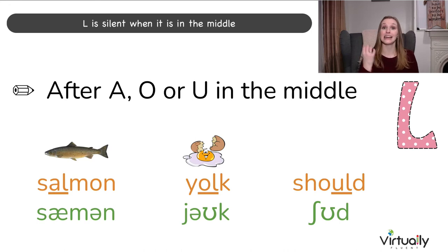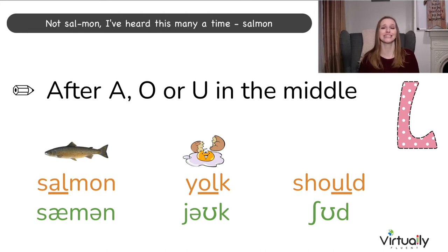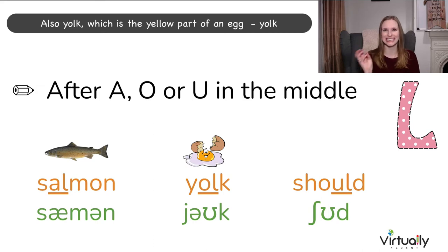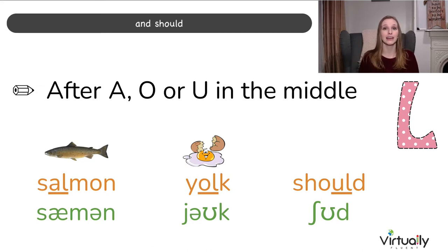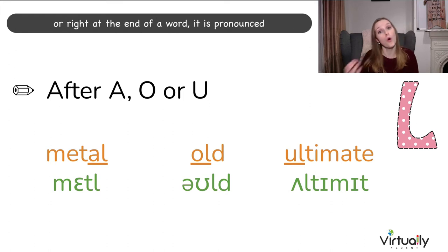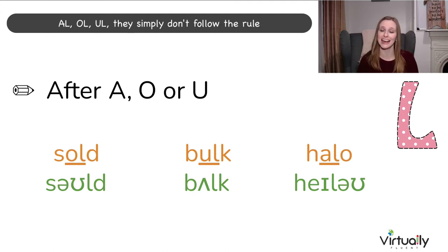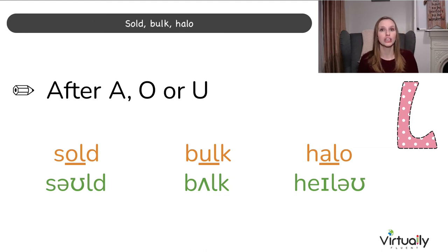L is silent when it is in the middle and immediately before it is an A, an O, or a U. For example: salmon — not 'sal-mon' — yolk, which is the yellow part of an egg, and should. However, when we have AL, OL, or UL at the beginning or right at the end of a word, it is pronounced — for example: metal, old, ultimate. And there are some words in the middle with AL, OL, or UL that simply don't follow the rule: sold, bulk, halo.